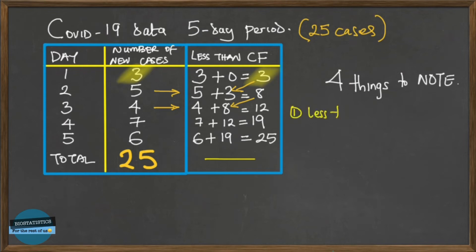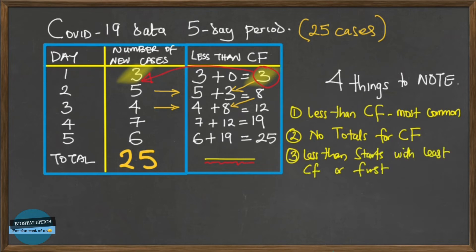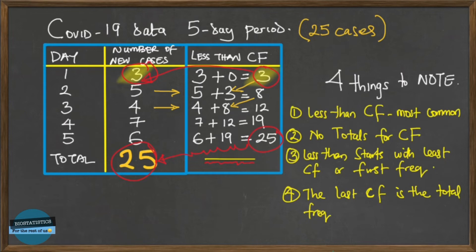There are four things to note about less-than cumulative frequency. First, it is the most common type. Second, there are no totals for cumulative frequency — it wouldn't make sense to compute a total. Third, less-than cumulative frequency starts with the least cumulative frequency, which is the same as the first frequency (here, three). Fourth, the last cumulative frequency must equal the total frequency.